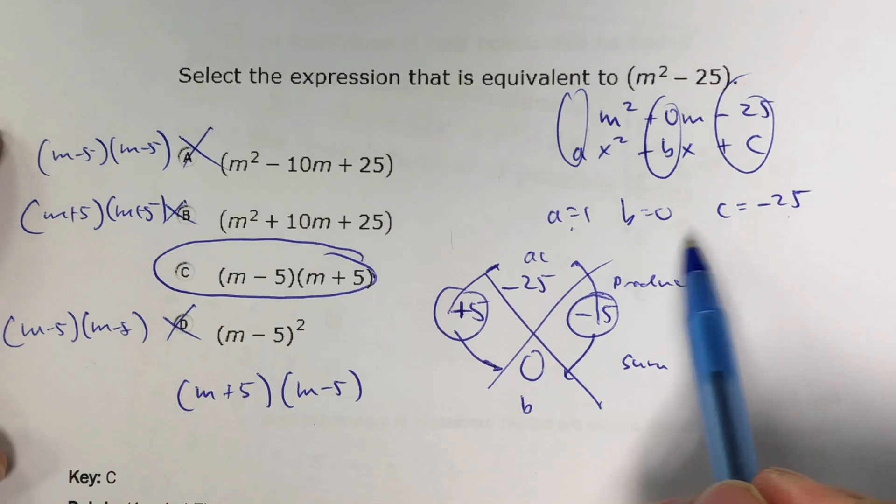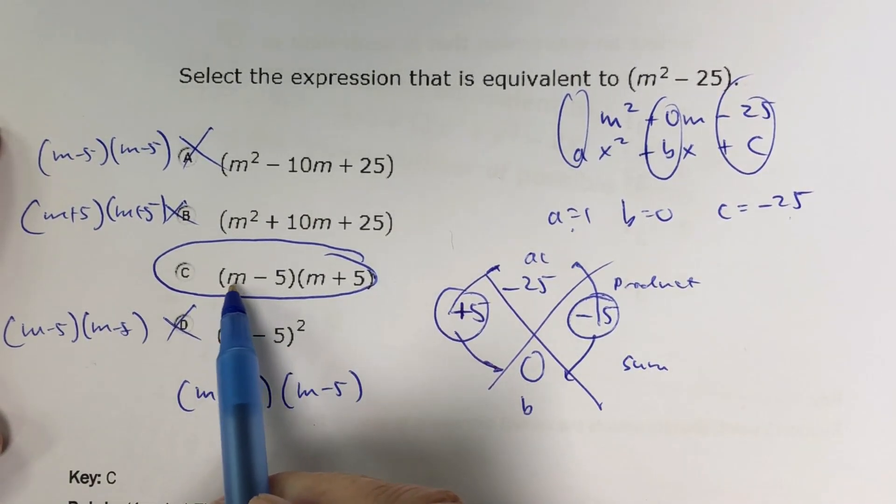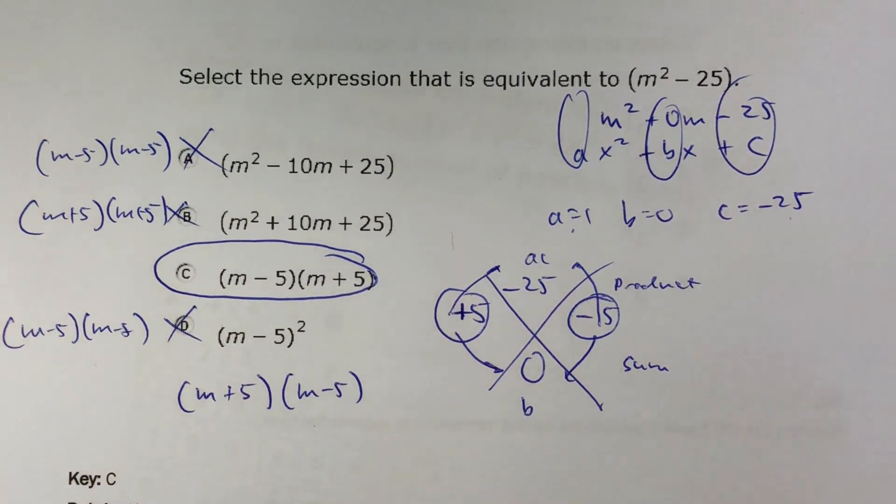So use some kind of method, some teachers use guess and check, I use the Xbox method. And then again, you can always just use FOIL to check your answer to get m squared minus 25.